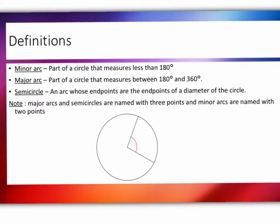We have three definitions here, talking about the arcs of a circle and what a semicircle is. An arc of a circle is a piece of the ring of the circle — the circumference, a part of the perimeter of a circle. A minor arc is part of a circle that measures less than 180 degrees. This section, this piece of the outside border of the circle, would be a minor arc.